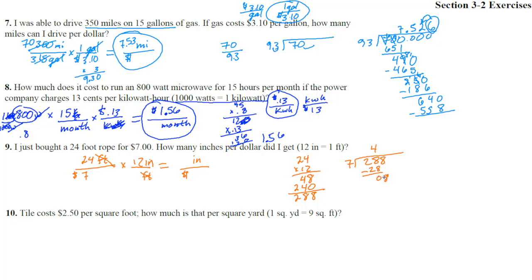7 goes into 8 once. 1 times 7 is 7. Subtract, we get 1. If we do a decimal or 2 here. Bring down the 0. 7 goes into 10 one time. 1 times 7 is 7. Subtract and we get a 3. Drop down a 0. 7 goes into 3 four times.